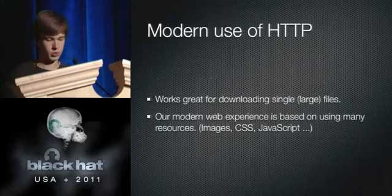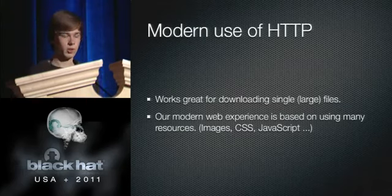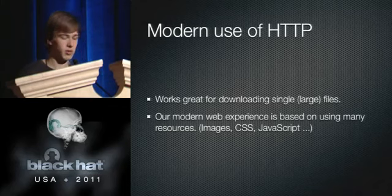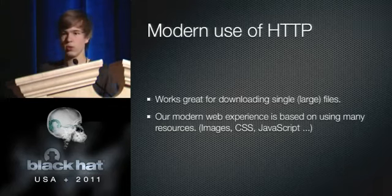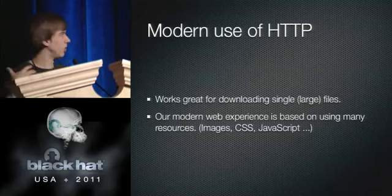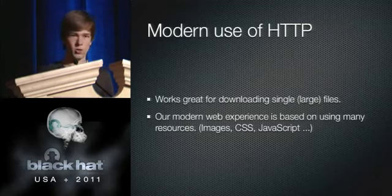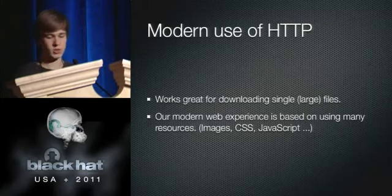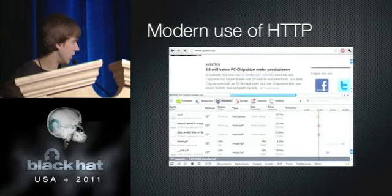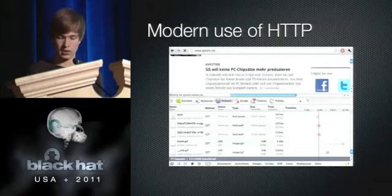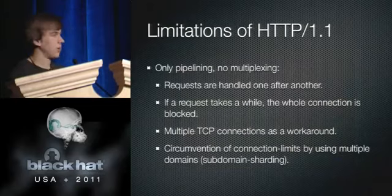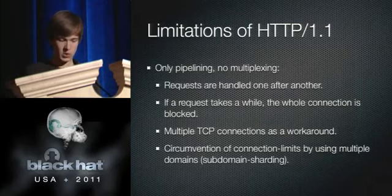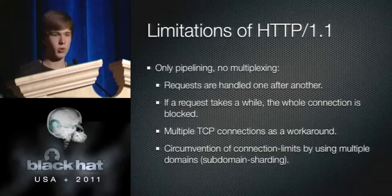Let's talk about the modern use of HTTP. HTTP was designed for downloading single files — it works great for downloading an ISO image or a single HTML file. But our modern web experience is mainly influenced by using many, many resources: images, videos, CSS, JavaScript. A single site actually takes 77 requests or more. That's problematic because HTTP only allows pipelining — you can't request several resources at once and download them simultaneously.